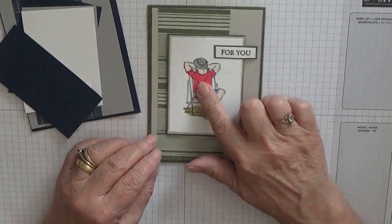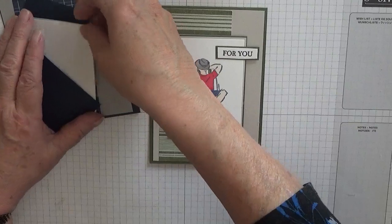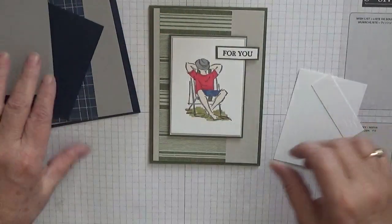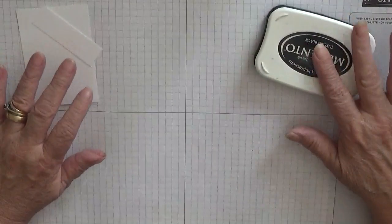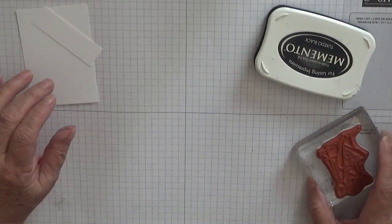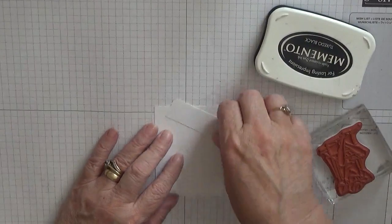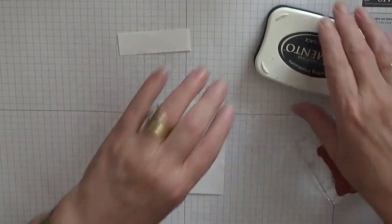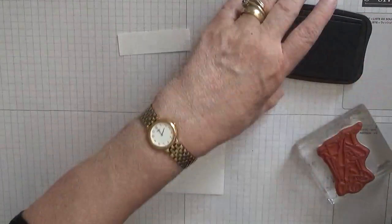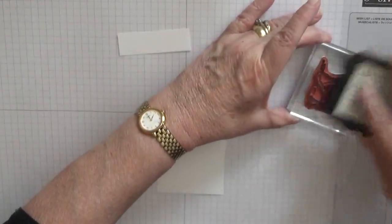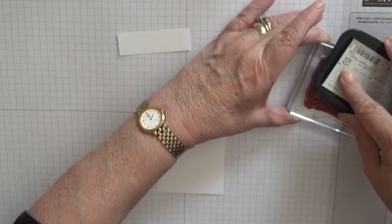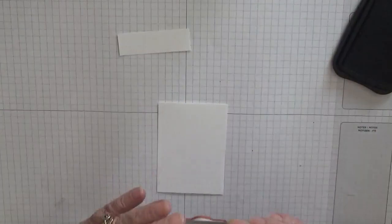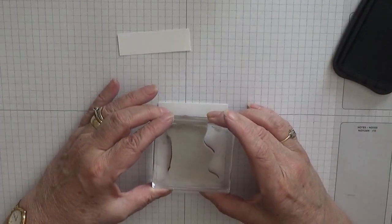So to get started we'll do our stamping. I've got my Memento Tuxedo Black, my piece of white card. I'll ink up the stamp.